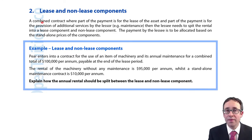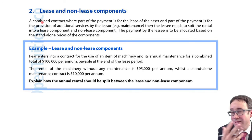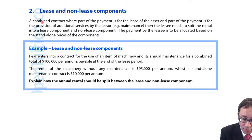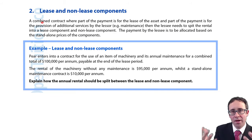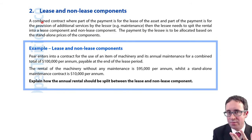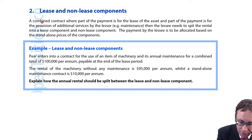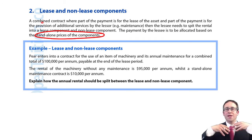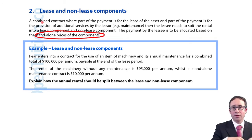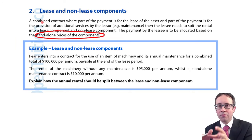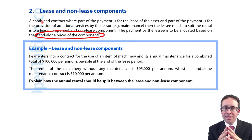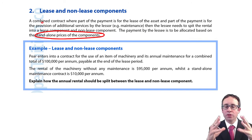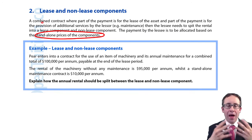How do we split the payment? We're going to base it very similarly to what we saw in IFRS 15 and revenue. You can see consistency appearing between the standards, which is great. It's all based upon the standalone prices. So you take the standalone price of the lease component, take the standalone price of the non-lease component, add them together to get the total standalone prices, and then allocate based on that proportion.